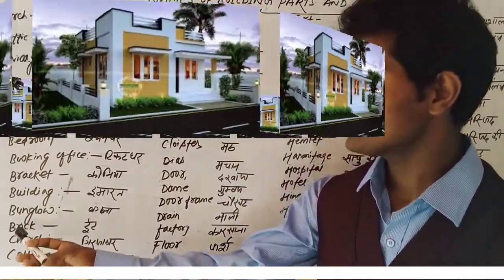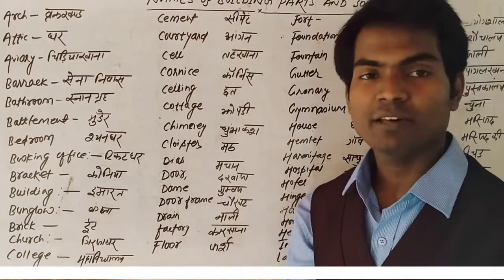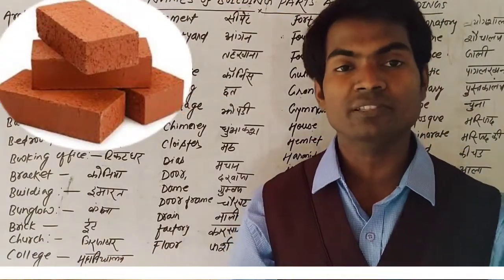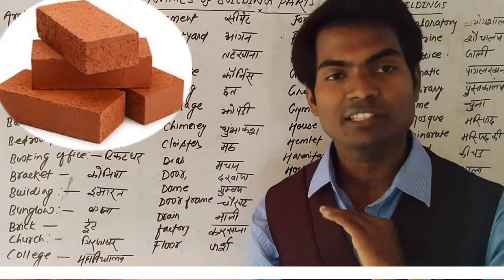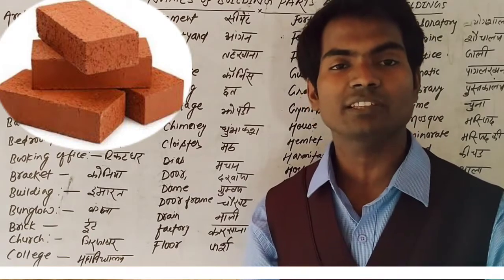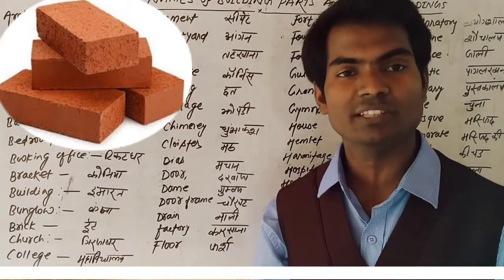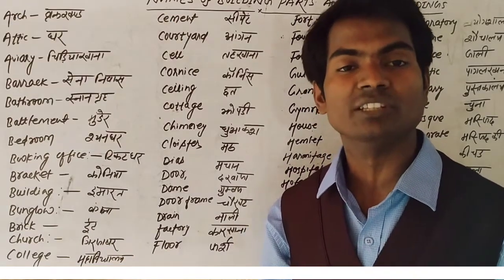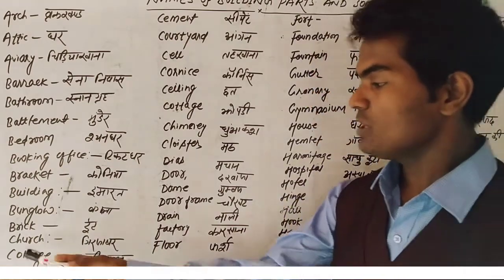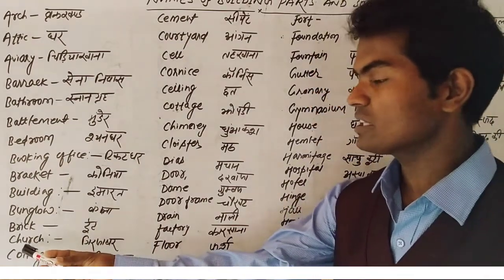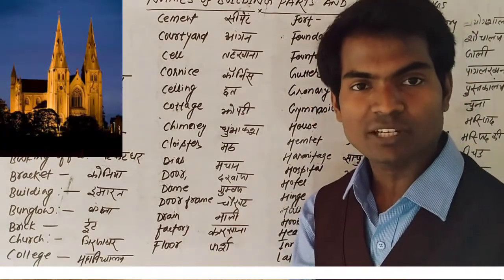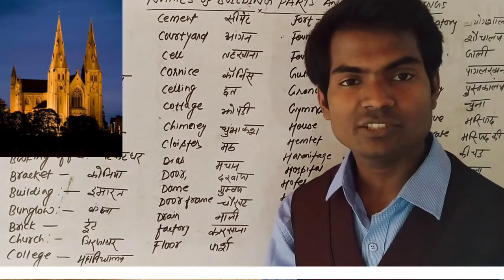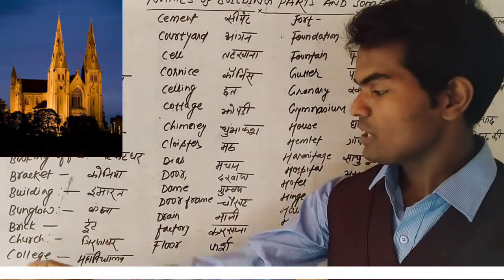Brick — brick means 'iit.' Just as our body's formation is from cells, similarly when we build a house or a building, we use bricks in very large quantities — we use 'iit' to make the building. Church — church ka matlab hota hai 'girja ghar.'